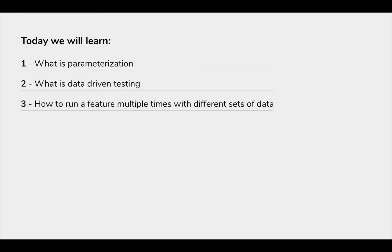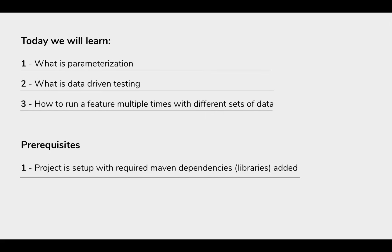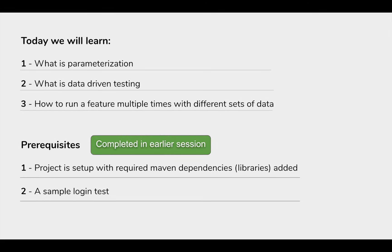In the demo, I will run a feature file multiple times with different sets of data. The prerequisites are you should have the project set up with required Maven dependencies of Cucumber and Selenium — this we have already done in the earlier session — and we should also have a sample login test created, which again we have done in the earlier session. So we have already completed the prerequisites.